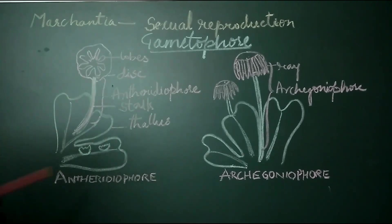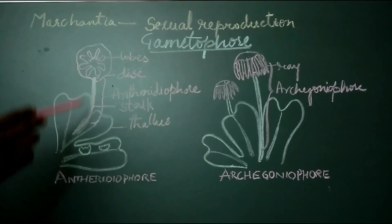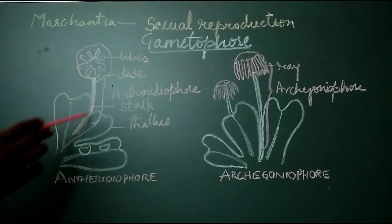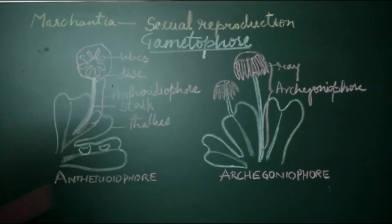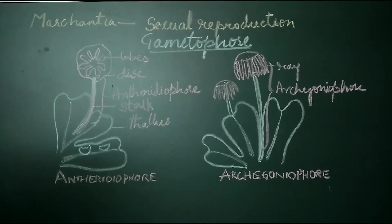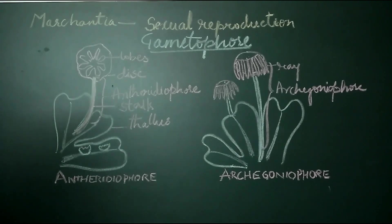The gametophore is actually an extension of the thallus. Marchantia is a heterothallic species — that is, it is dioecious — where the male sex organs and the female sex organs develop on two different thalli.